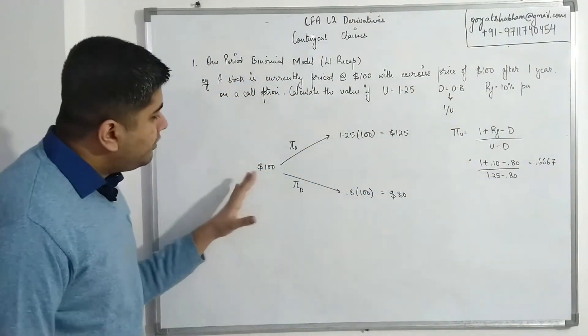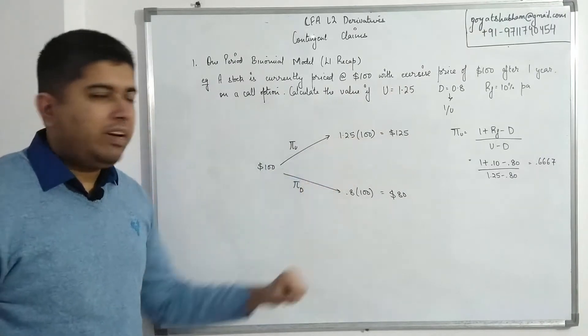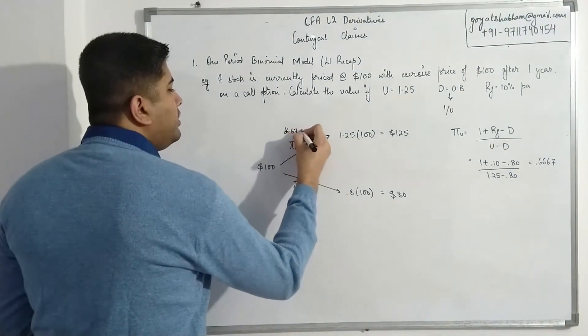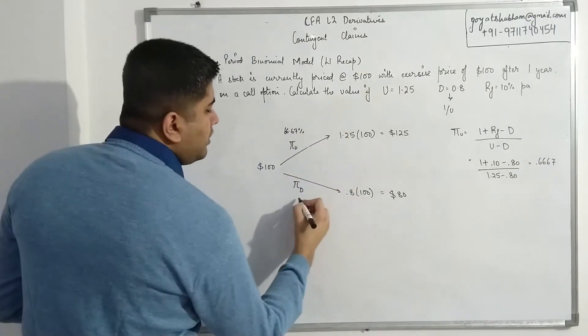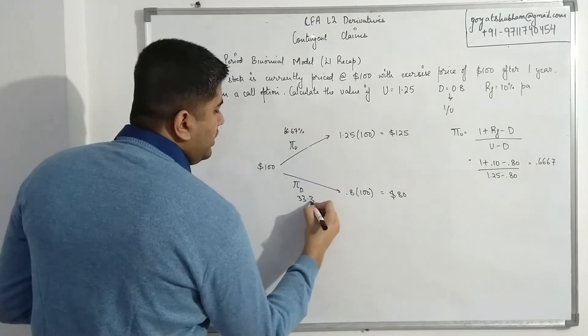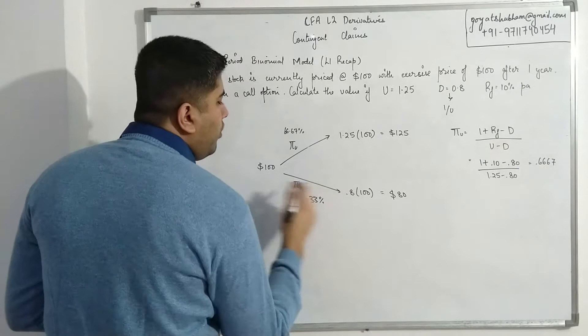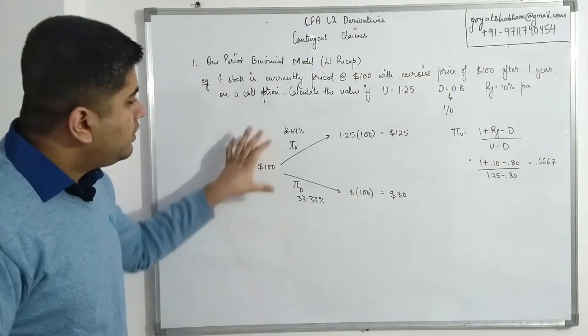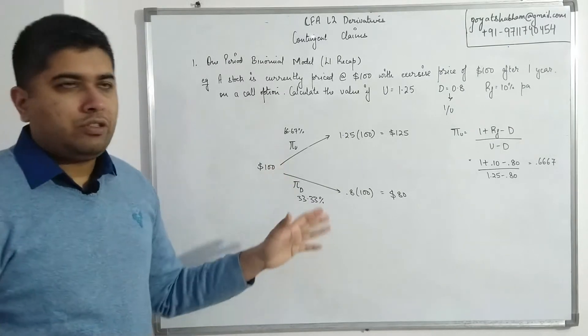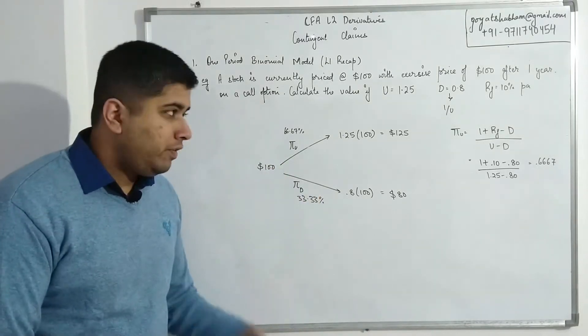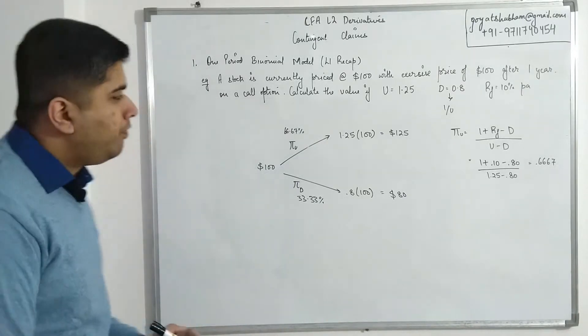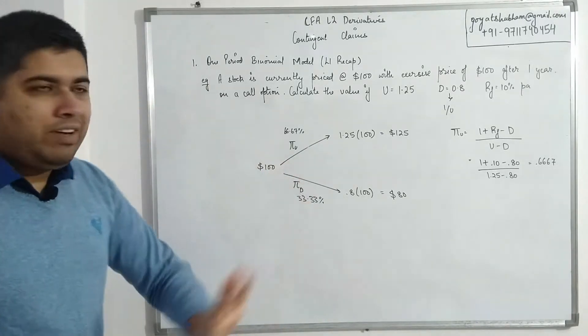This means that the chance of this stock price going to 125 is 66.67 percent, and there's a 33.33 percent chance that the stock will fall down in price to a value of 80 dollars. The sum of these two has to be one, because if there are only two possible outcomes and we know the probability of one, the probability of other must make the sum equal to one.